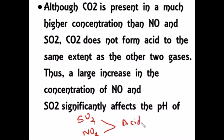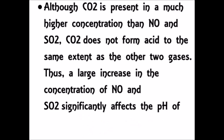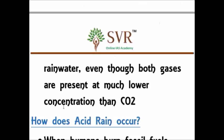In prelims, if you get a question like 'which of the following affects the pH of rainwater significantly' and the choices are sulfur dioxide, nitrogen dioxide, carbon dioxide, and none of the above — you have to mark both sulfur dioxide and nitrogen dioxide, not carbon dioxide.